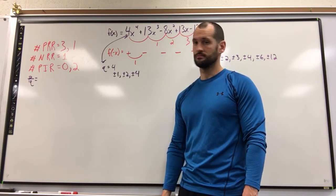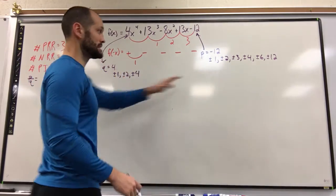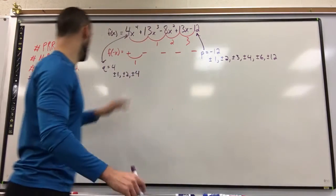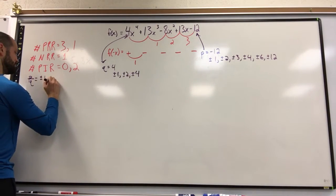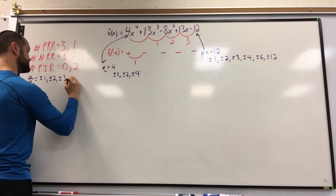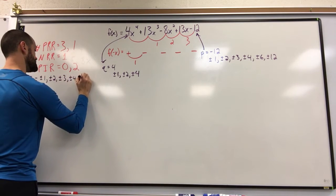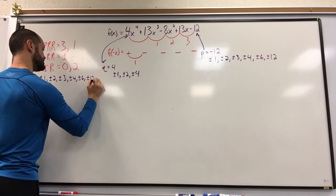Lots of them. Let's list it. Start simple. We're going to take all of these and put them over 1, so it will be that exact list. Plus or minus 1, plus or minus 2, plus or minus 3, plus or minus 4, plus or minus 6, plus or minus 12.